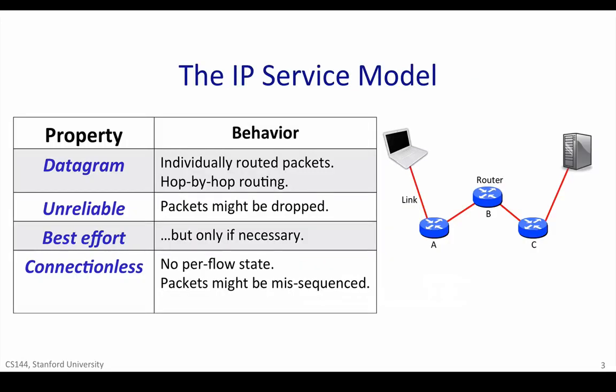The IP service can be characterized by four properties. It sends datagrams from end-host to end-host. It is unreliable, but makes the best effort to deliver the datagrams. The network maintains no per-flow state associated with the datagrams. Let's take a look at each one of these in turn.